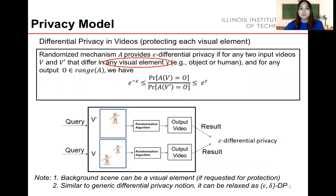To protect sensitive visual elements in the video, we give a visual element-based differential privacy definition. Each video owner can predefine sensitive visual elements by themselves. Video DP ensures that adding any visual element into any number of frames, or removing any visual element from the video, would not result in significant privacy risks in video analytics. It is worth noting that even the background in the video can be defined as sensitive information and protected. Similar to traditional DP definition, there is an exception: if the query aims at specific visual elements, some RGB outputs may not be in the smaller dataset, with probability 0, and epsilon DP can be relaxed to epsilon-delta DP.